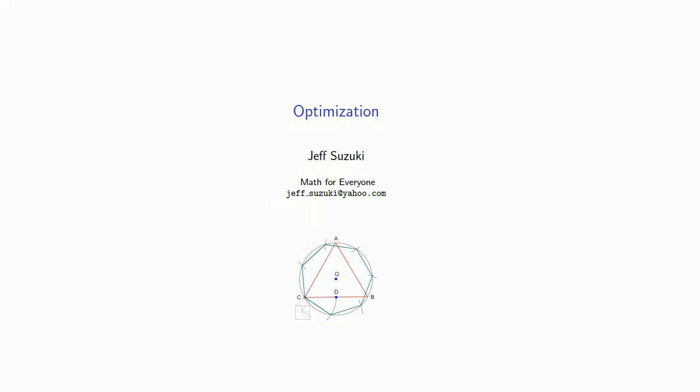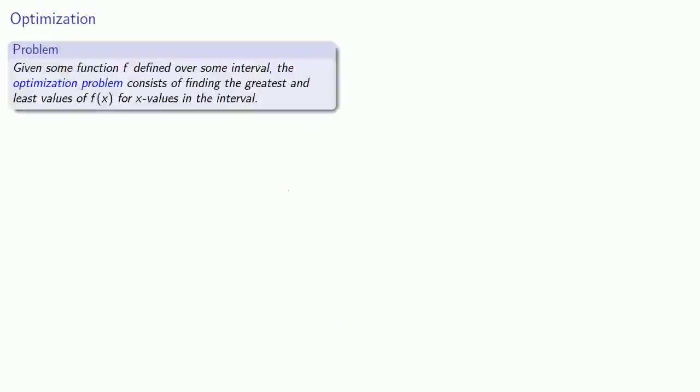Calculus began as a way to solve three problems, and one of those three problems is called the optimization problem. Given some function f defined over some interval, the optimization problem consists of finding the greatest and least values of f(x) for x values in that interval.